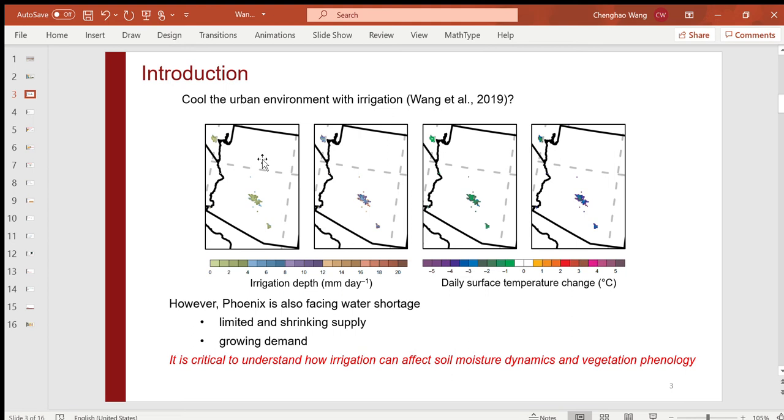However, Phoenix is also facing severe water shortage issues, as you may know, including both limited and shrinking supply and rapid growing demand. So it is very critical to understand how irrigation can affect soil moisture dynamics and vegetation phenology here.